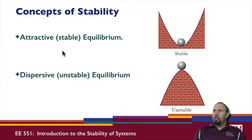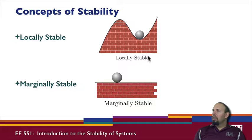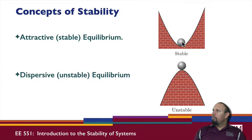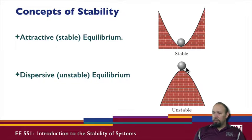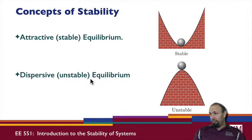For physical intuition: an attractive or stable equilibrium is one where, if you start with a ball slightly off the equilibrium, it will eventually settle back to the equilibrium. A dispersive or unstable equilibrium is one where the ball may balance exactly at the equilibrium, but if moved slightly to one side it will diverge away from that equilibrium.